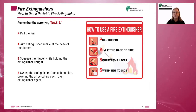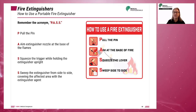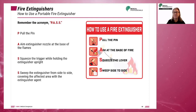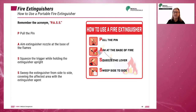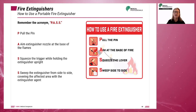In using a fire extinguisher, the acronym PASS is used to remember the steps. P — pull the pin. A — aim the extinguisher nozzle at the base of the fire. S — squeeze the trigger while holding the extinguisher upright. S — sweep the extinguisher from side to side, covering the affected area with the extinguisher agent.